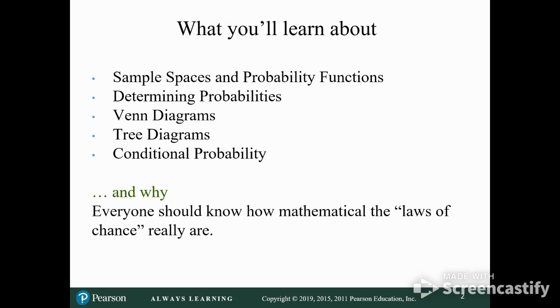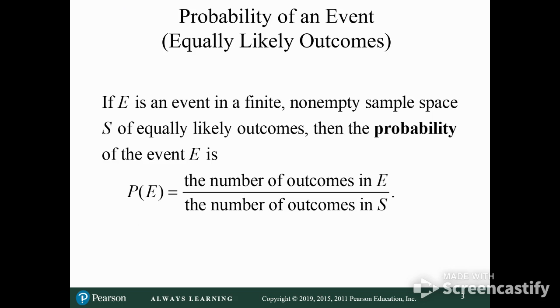Sample spaces, probability functions, Venn diagrams, tree diagrams, all that fun stuff. Probability is the number of favorable outcomes over the total number of outcomes. The number of outcomes that we're talking about over the total number of outcomes. The probability that it's going to snow tomorrow might be 13%. So out of 100 chances, there are 13 chances it will snow. So then the complement of that event would be there is an 87% chance that it will not snow. Those are called the complement of an event.